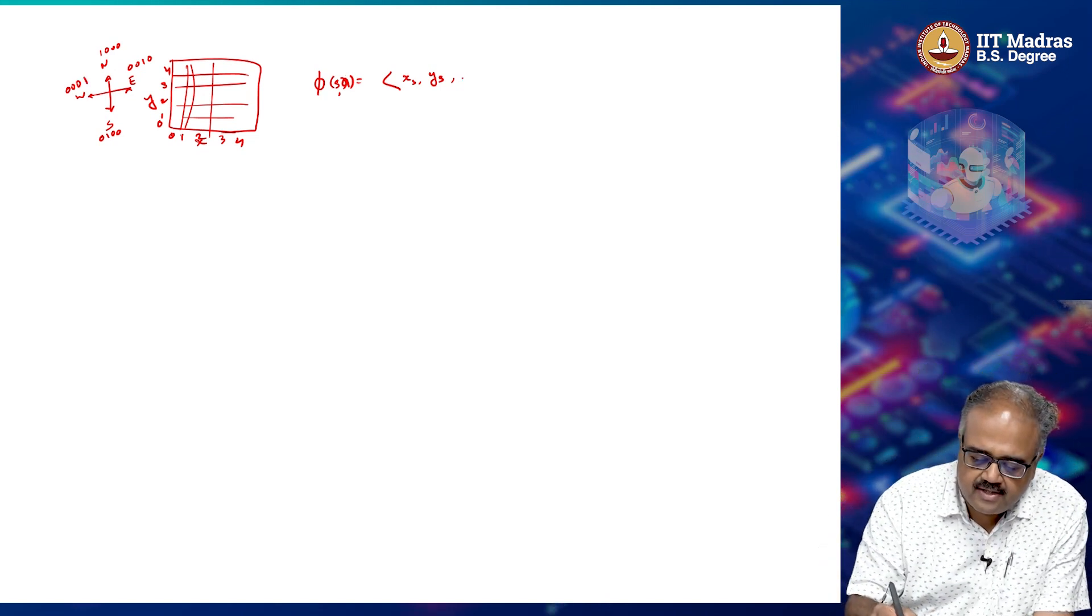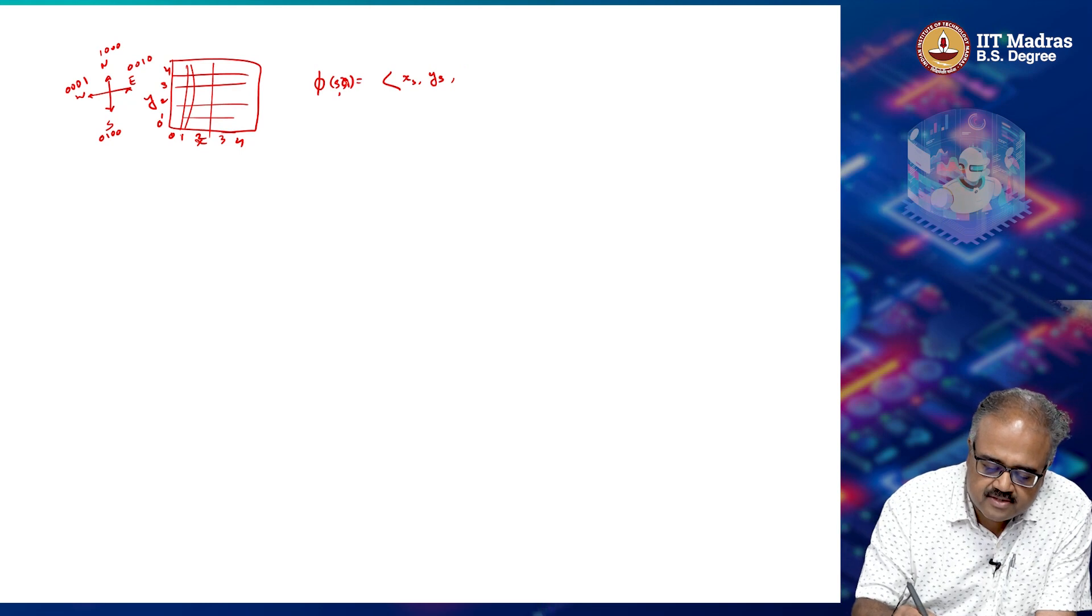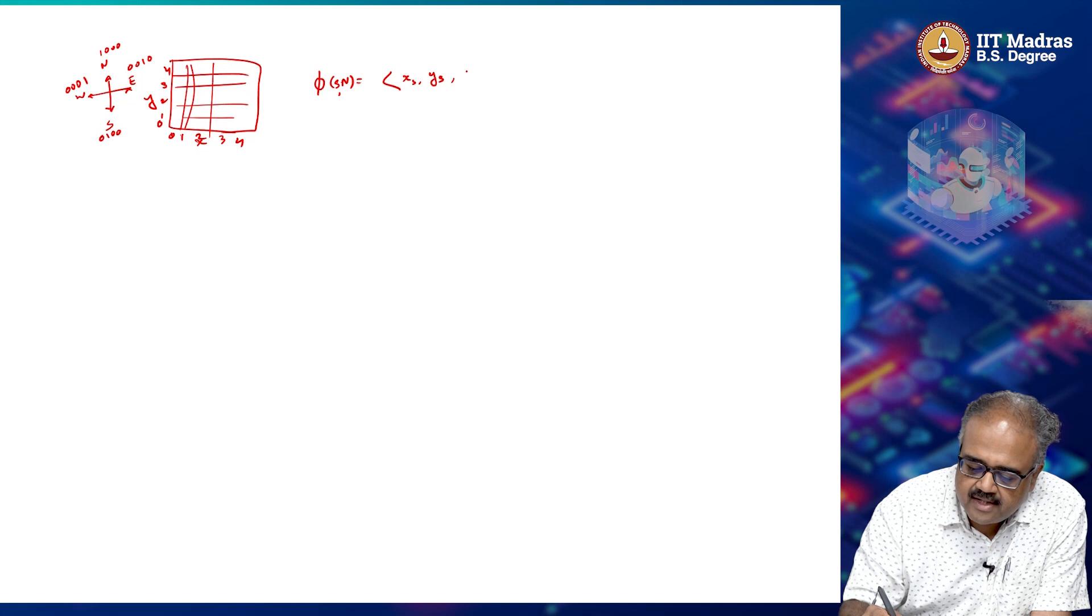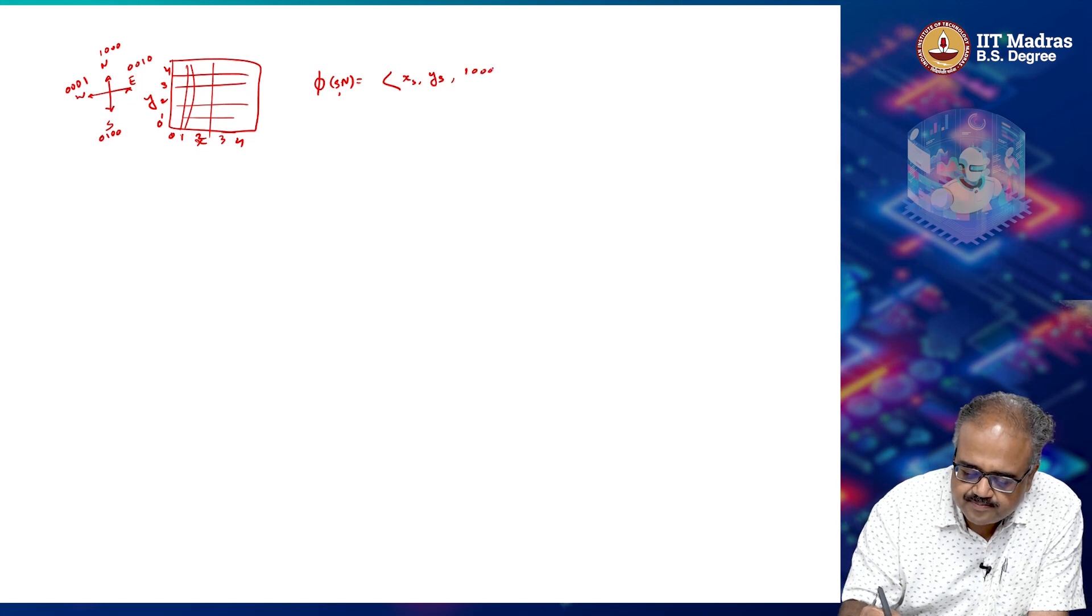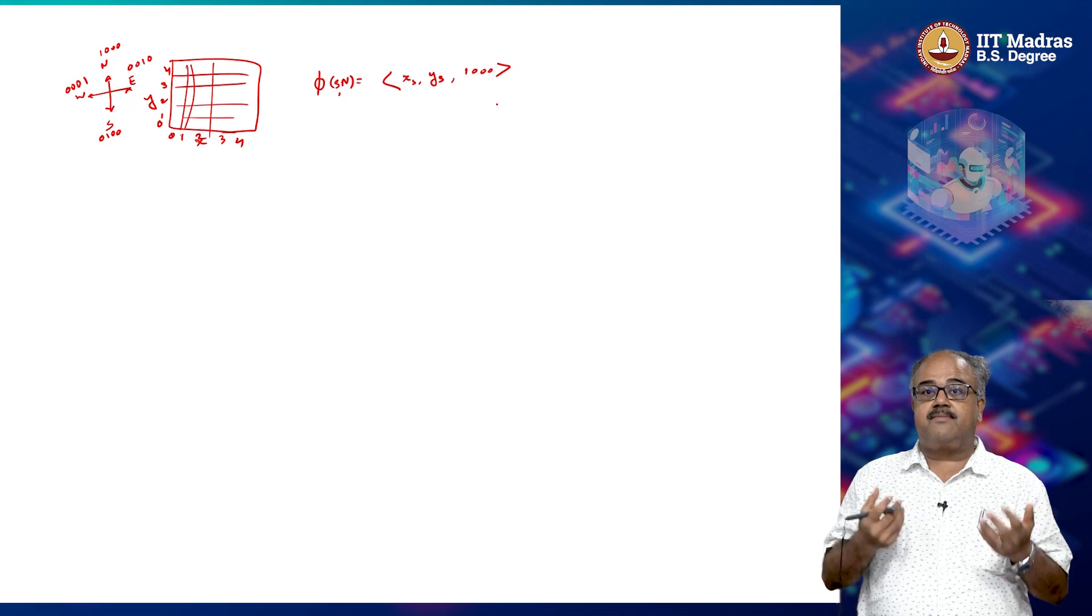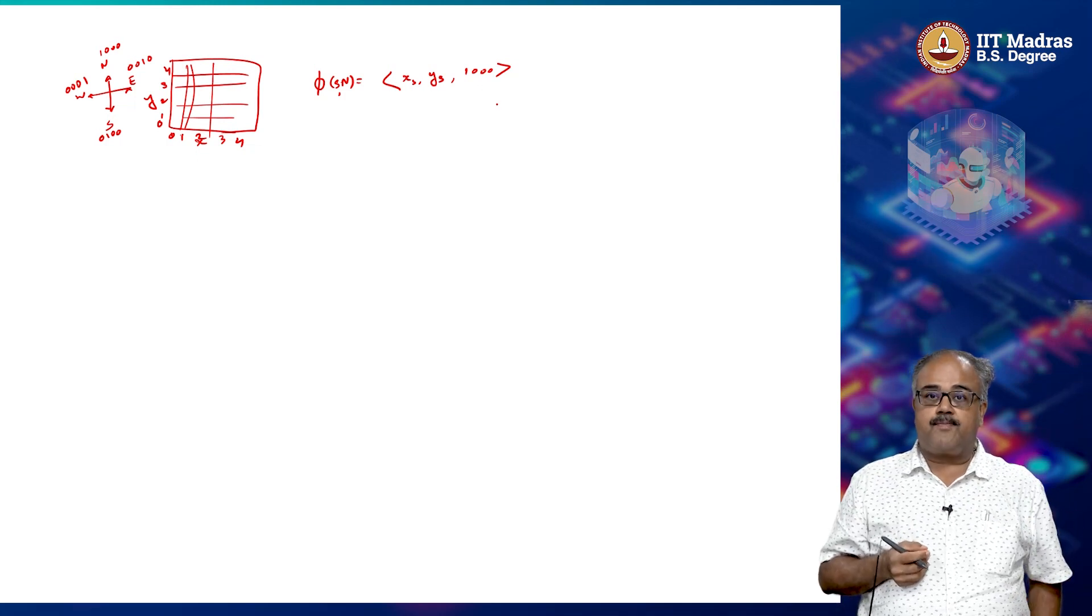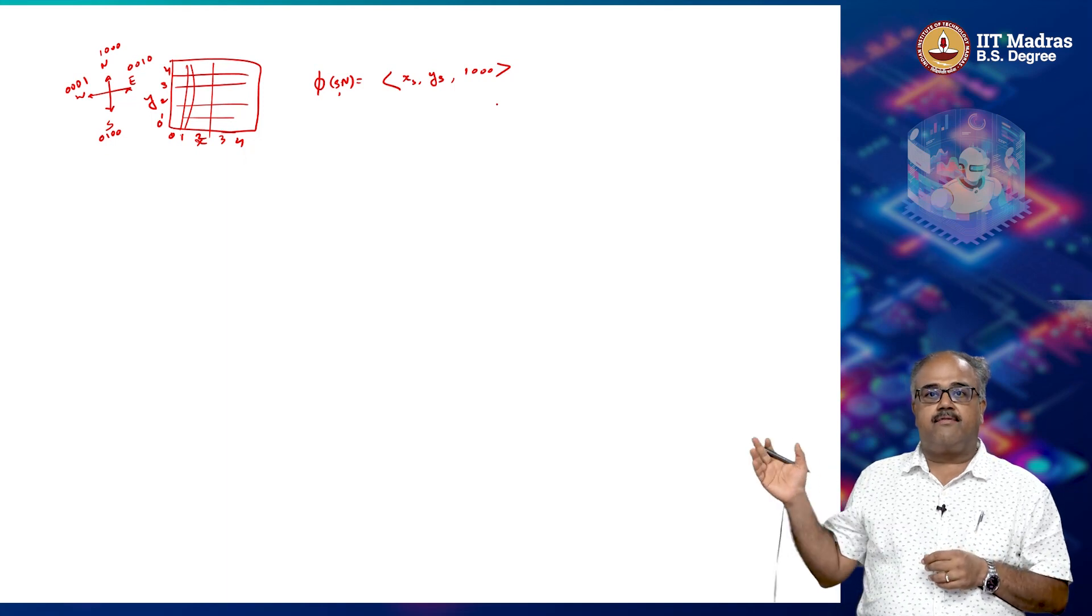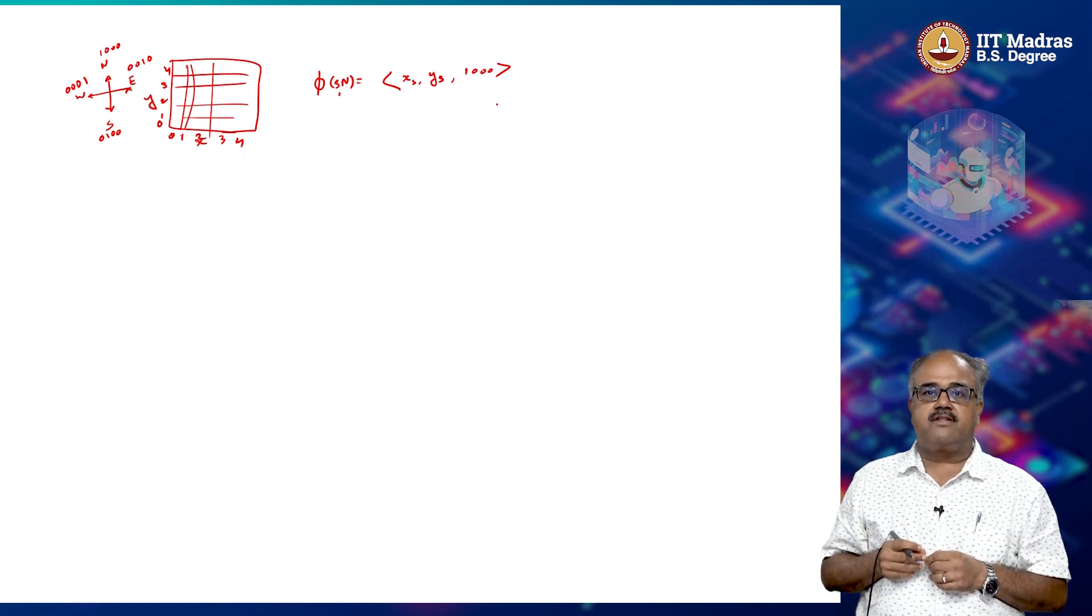So now if I want to encode the action, then I will say suppose this is north, I will say then my action is 1, 0, 0. So now I have a 6 dimensional vector that corresponds to a state and action pair in this kind of a grid world scenario.